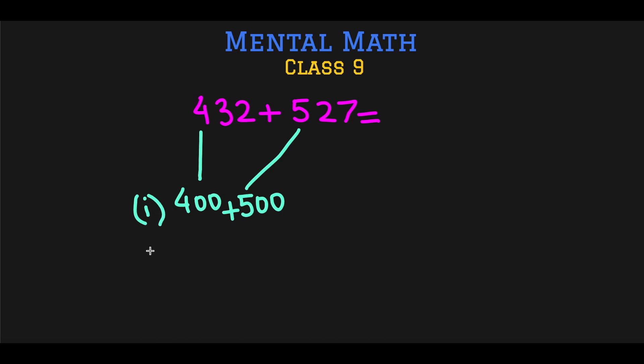So this is part one of our trick. Remember that all of this is happening in our brain. Now 432 has three tens, which is 30, and 527 has 2 tens, that is 20. So this is part 2 of our trick.